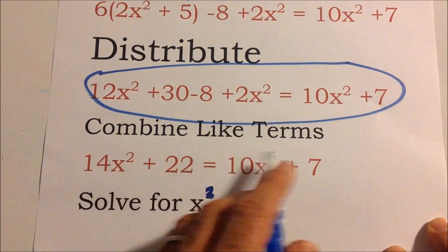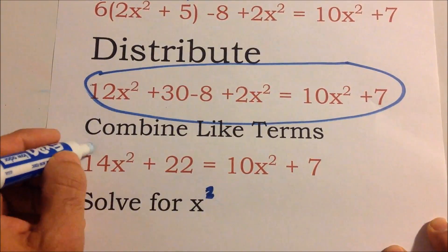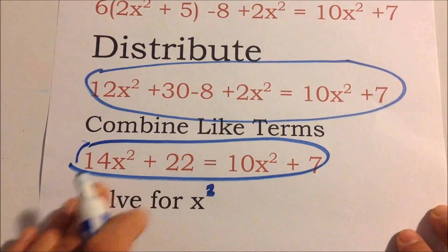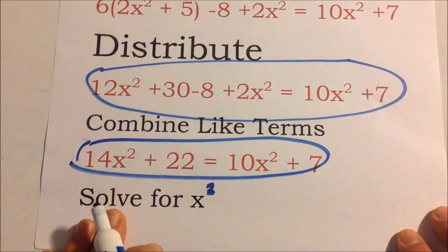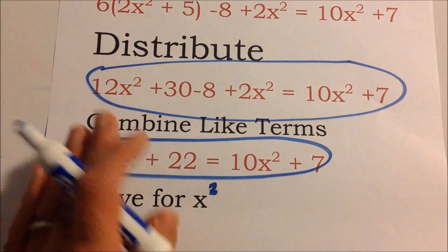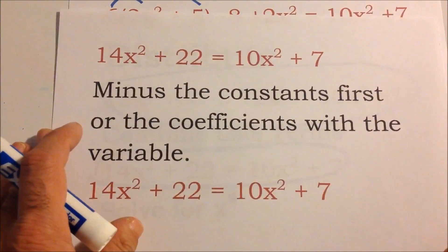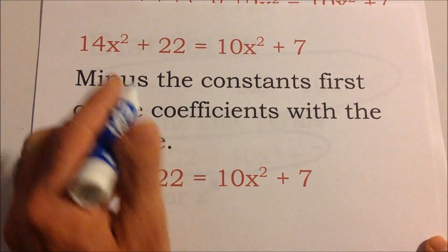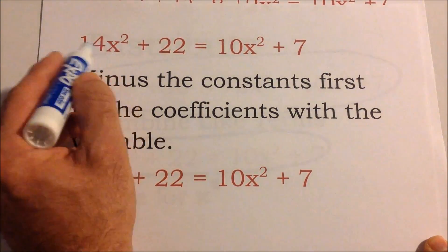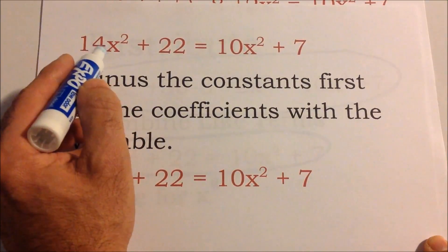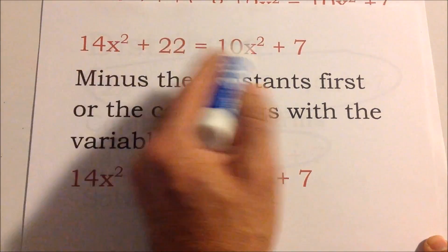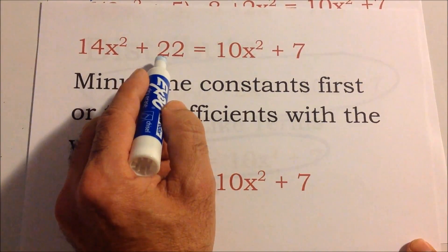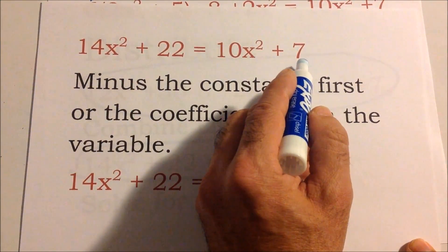We can still solve for x, so rewind if you didn't follow how we got here. Now we'll subtract the constants. You can also subtract the x squared terms first — 14x squared or 10x squared, whichever you prefer. It doesn't matter whether you subtract the 22 or the 7 first.